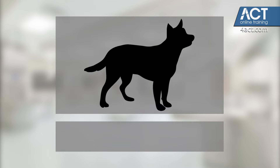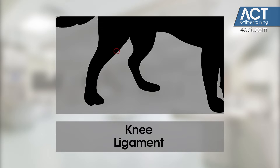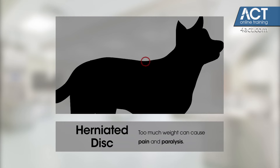Certain connections between obesity and disease are easy to realize. Joints can be overburdened by carrying too much weight and develop arthritis, an inflammatory reaction that causes pain. Furthermore, a dog or cat can rupture a ligament in the knee from being overloaded. Overweight animals are more likely to develop a herniated disc in the spine, which can cause a great deal of pain or even paralysis.